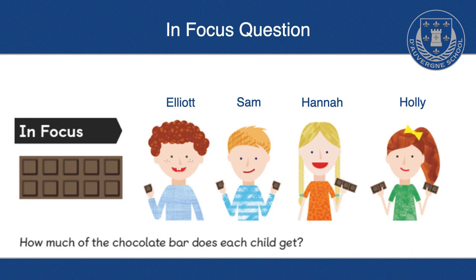In-focus question. It says, how much of the chocolate bar does each child get? So we've got four characters here: Elliot, Sam, Hannah and Holly. And as you can tell, they're holding different amounts of the chocolate bar.